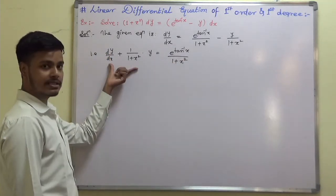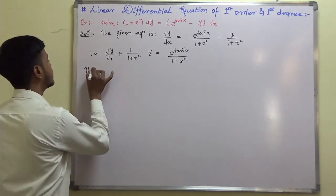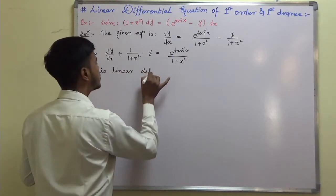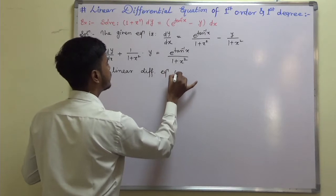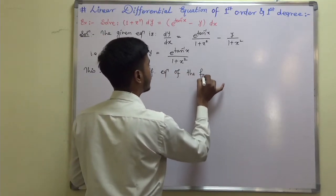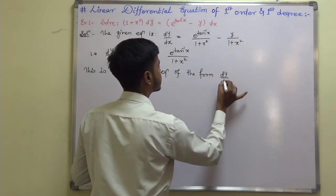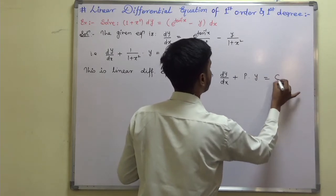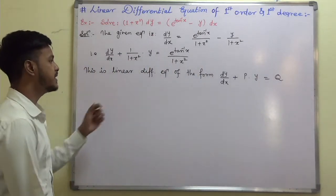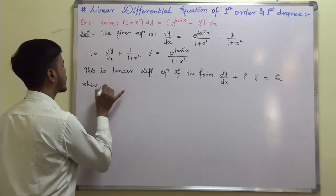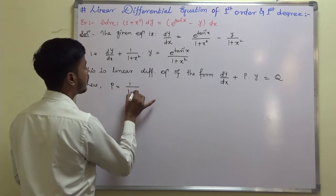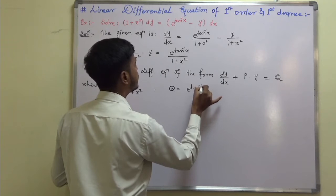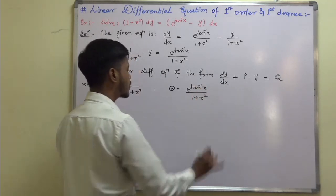As you can see, this differential equation is a linear differential equation of the form dy/dx + P·y = Q. Where P is equal to 1/(1 + x²), and Q is equal to e^(tan⁻¹x) / (1 + x²).